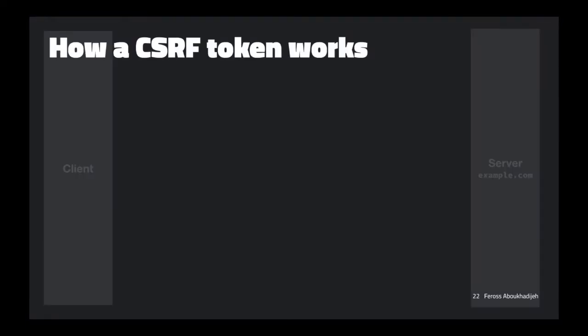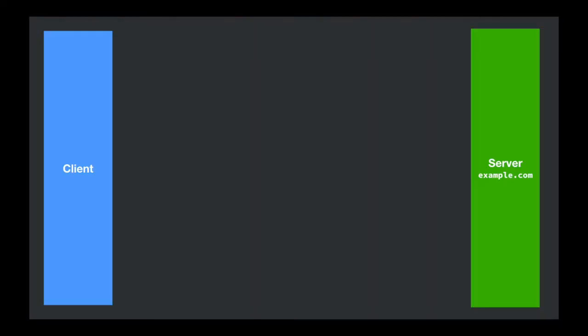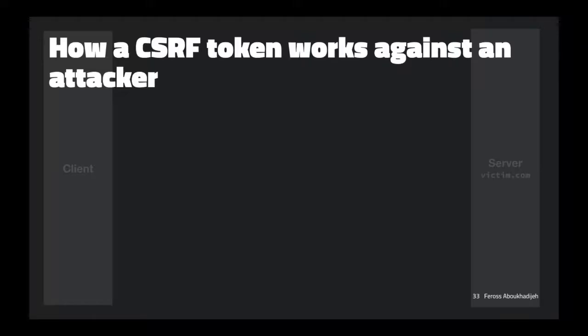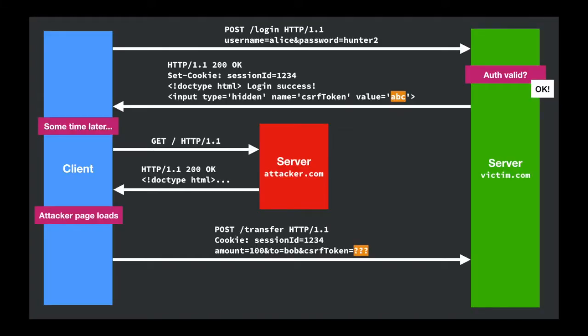If the same-site cookie header is sent strictly enough, CSRF tokens aren't necessary — the attacker request wouldn't even include cookies. You could use both together, which still makes sense for users on very old browsers or legacy enterprise apps. You might also see CSRF tokens if using a web framework like Ruby on Rails or the popular CSRF package for Express. Until recently there was no browser-level protection against this, so literally every site on the internet had to implement this protection in their own app code.